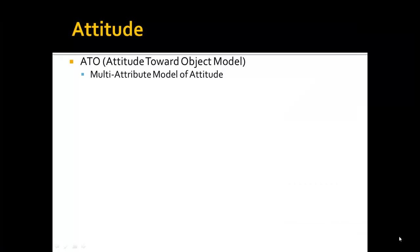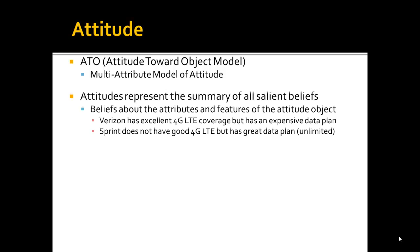The multi-attribute model of attitudes, also known as the ATO model, or the attitude toward the object model. Essentially, attitudes represent the summary — the compilation, the sum — of all our salient beliefs about the attitude object.